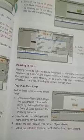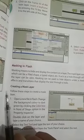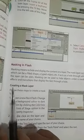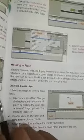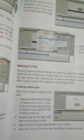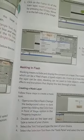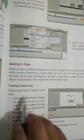Masking displays content on a layer. The mask item is a filled shape, type object, etc. Transitions and display effects are used under a mask spotlight.